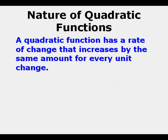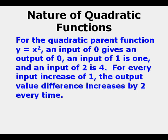A quadratic function has a rate of change that increases by the same amount for every unit change. For example, in the quadratic parent function y equals x squared, an input of 0 gives an output of 0, an input of 1 is 1, an input of 2 is 4.